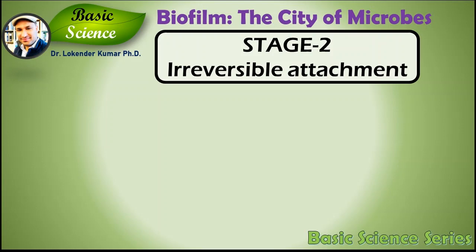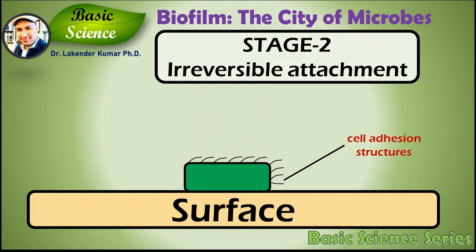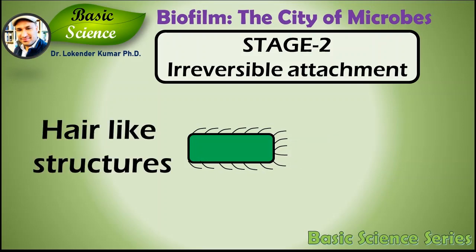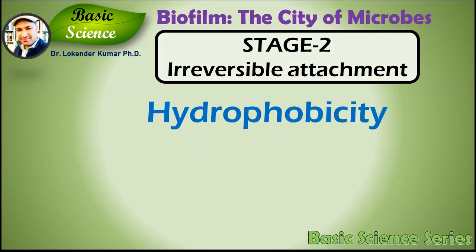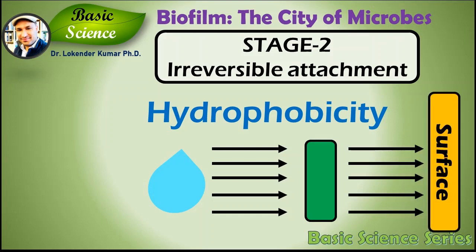Stage 2 is irreversible attachment. If the initial attachment process is successful, bacteria use cell adhesion structures to attach tightly to the surface. The most important cell surface structure is pili — hair-like structures found on the surface of many bacteria. Another property that helps in attachment is hydrophobicity, which quantifies how much a molecule is repelled by water. Since biofilms often form in moist environments, hydrophobicity helps cells get repelled by the water environment and remain close to the solid surface.